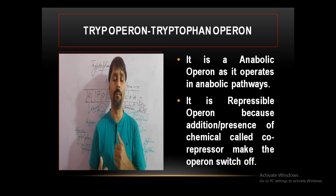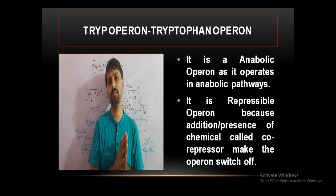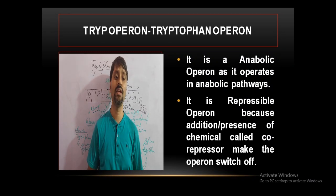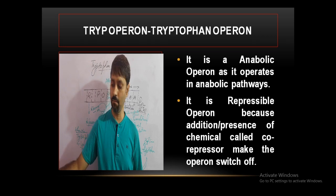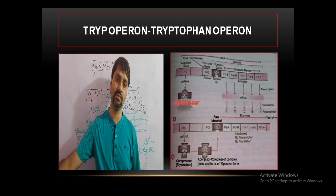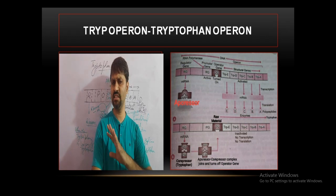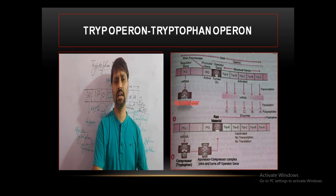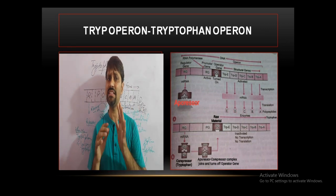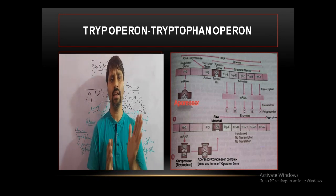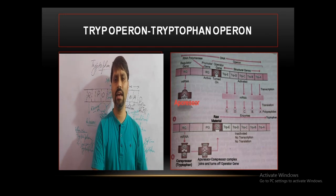In the tryptophan operon, if tryptophan is present in the medium, it will switch off the operon — so it is a repressible operon. It is an anabolic operon because tryptophan is synthesized during this process. The operon has similar components: a regulator gene, promoter gene, operator gene, and structural genes. In the lac operon there are three structural genes; here there are five — A, B, C, D, and E.